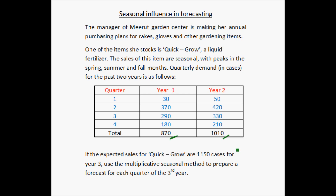Now, if the expected sales for Quick Grow are 1,150 cases for Year 3, we have to use the multiplicative seasonal method to prepare a forecast for each quarter of the third year — that is, we need to find out how much the expected sales are for each of the quarters of Year 3.